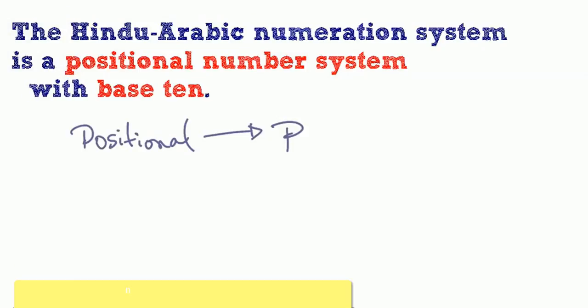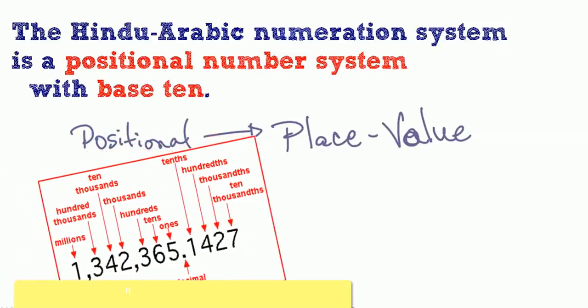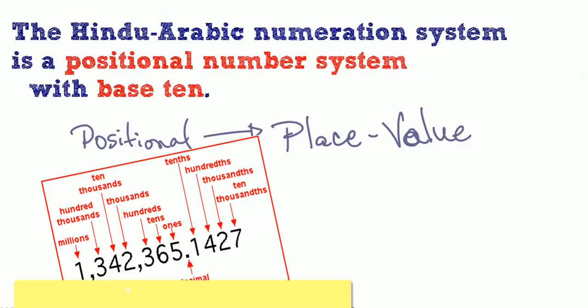We say it's positional because of the concept of place value, or each placement of each number has specific meaning. In other words, 243 is way different than the numbers 342.